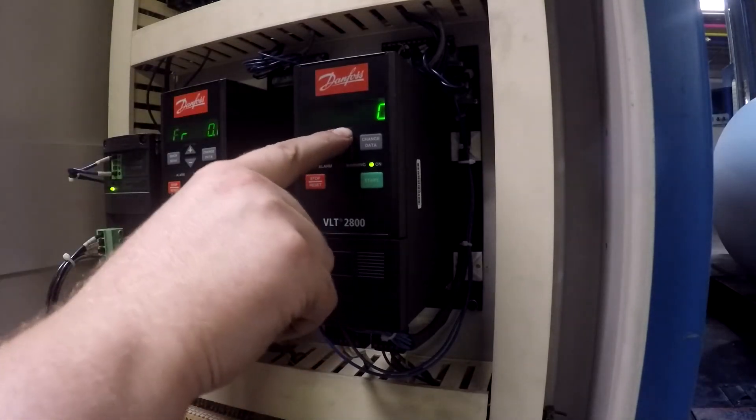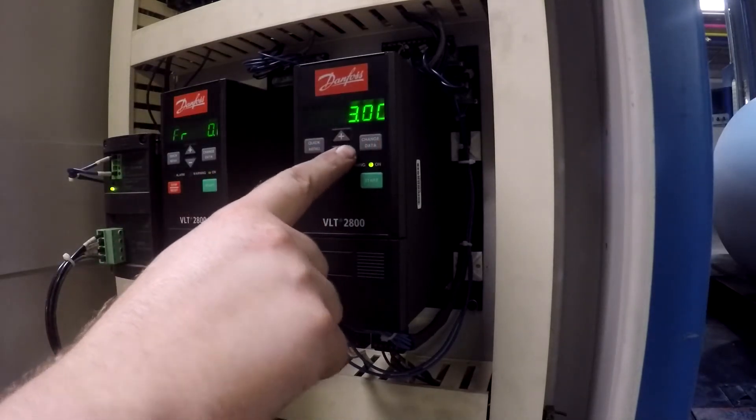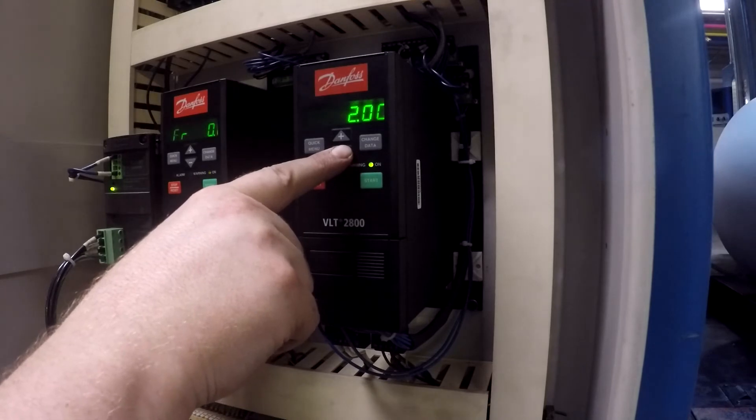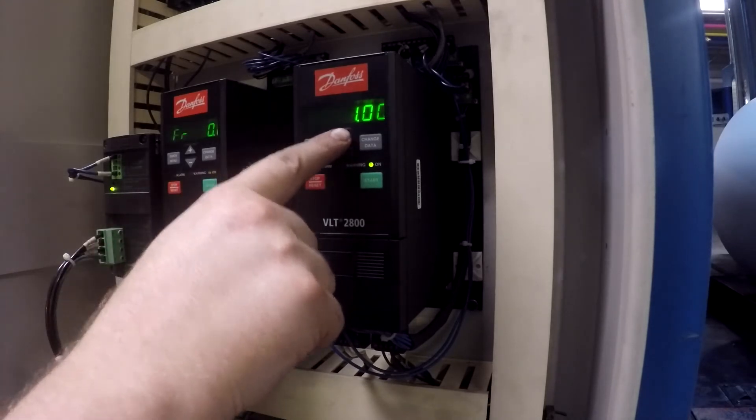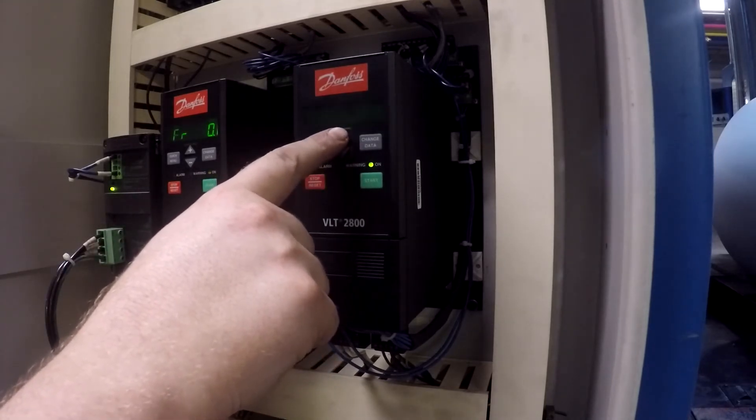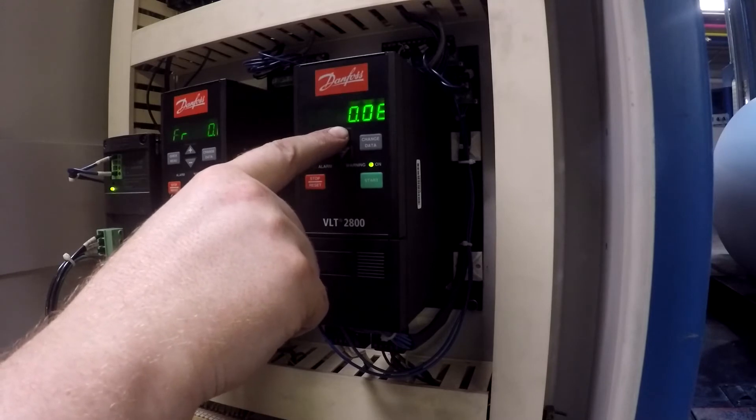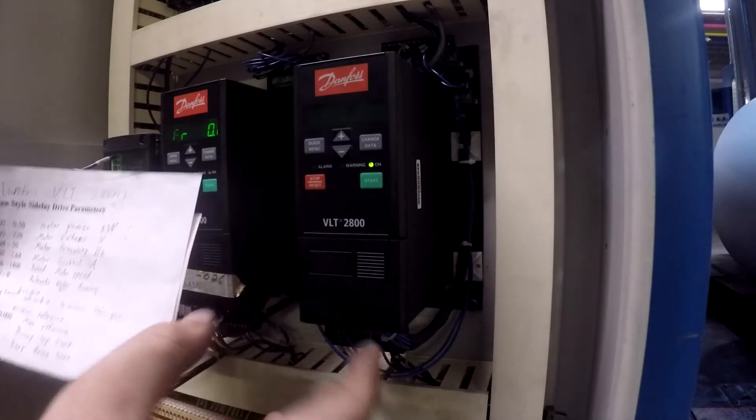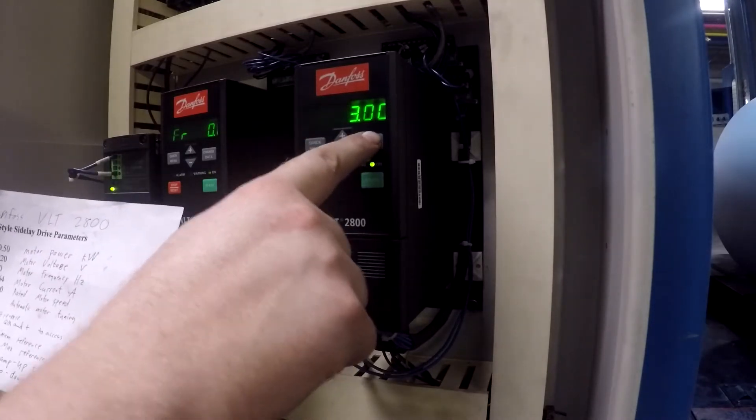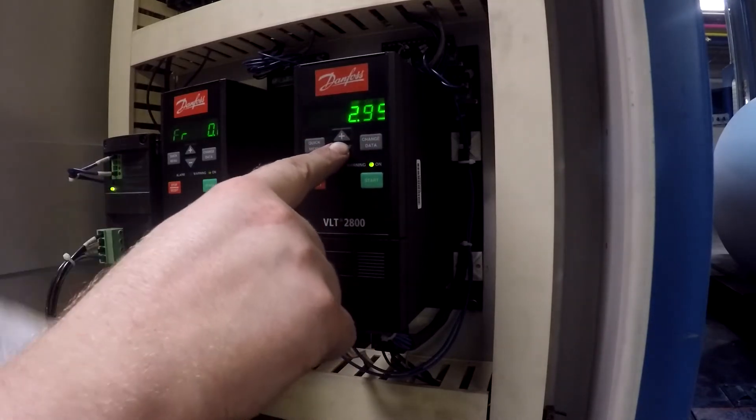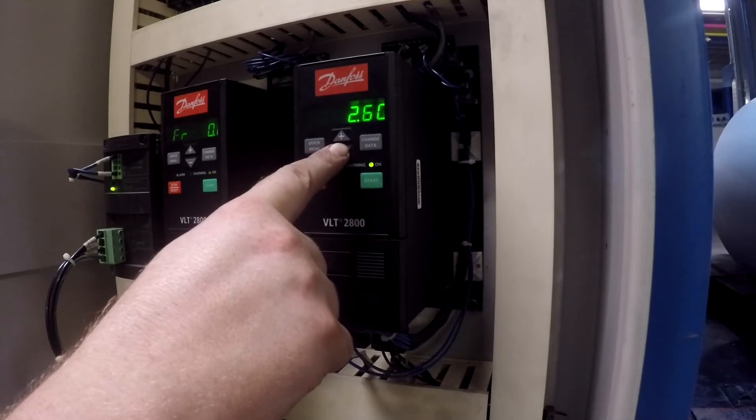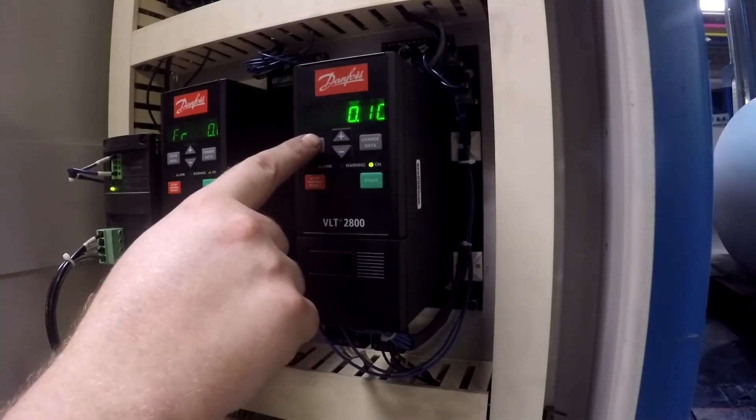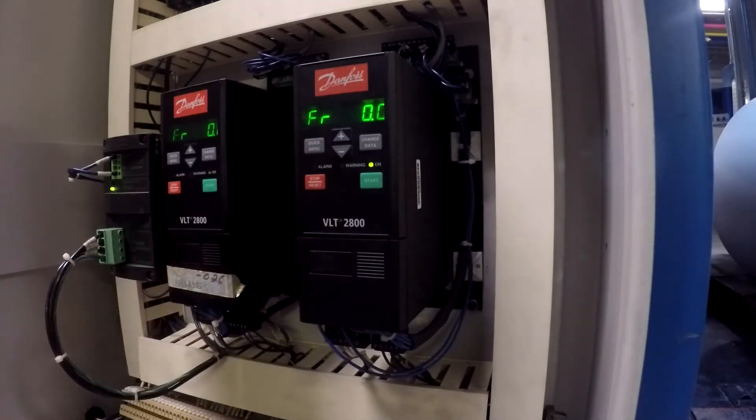207 should be 0.50, and that's the ramp up time. So in other words, that's how long it takes for the motor to get up to full speed. And then 208 should be 0.10, that's the ramp down time. Quick menu and we're ready to go.